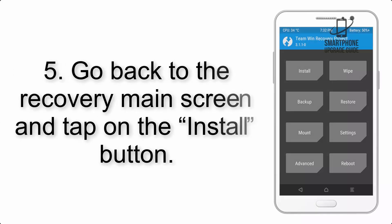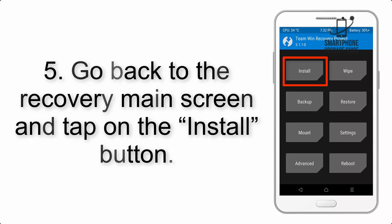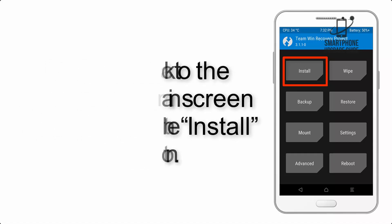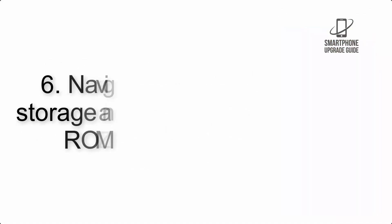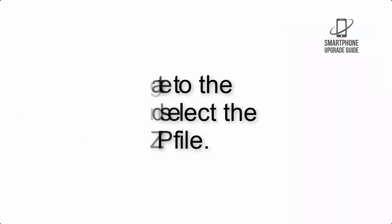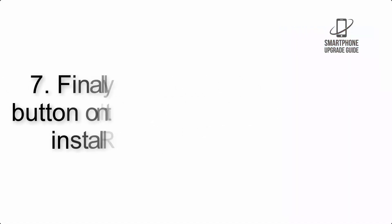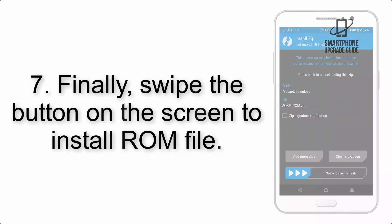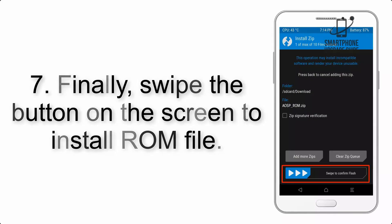Step 5: Go back to the recovery main screen and tap on the Install button. Step 6: Navigate to the storage package and select the ROM zip file. Step 7: Finally, swipe the button on the screen to install the ROM file.